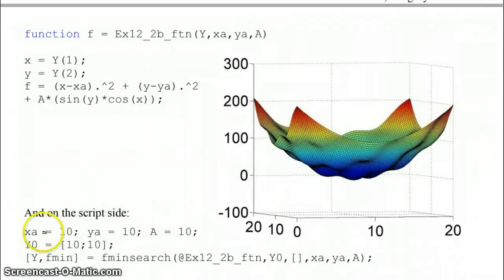On the script side, what we're going to do is we're going to define our three input parameters. We're going to define an initial guess, and then we're going to call fminsearch, referencing our function name, giving it our initial guess vector y0, empty brackets as a placeholder for the options parameter, and there are three extra parameters that get passed to our function in the order that you would see them in the function after the first input variable to the function. And so we're going to spit out what is the actual value of the location of the minimum, as well as what is the value of the minimum itself.